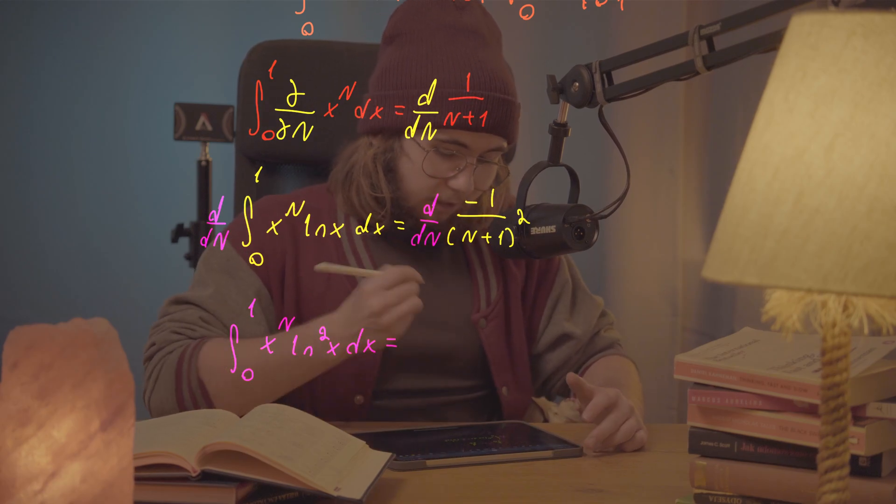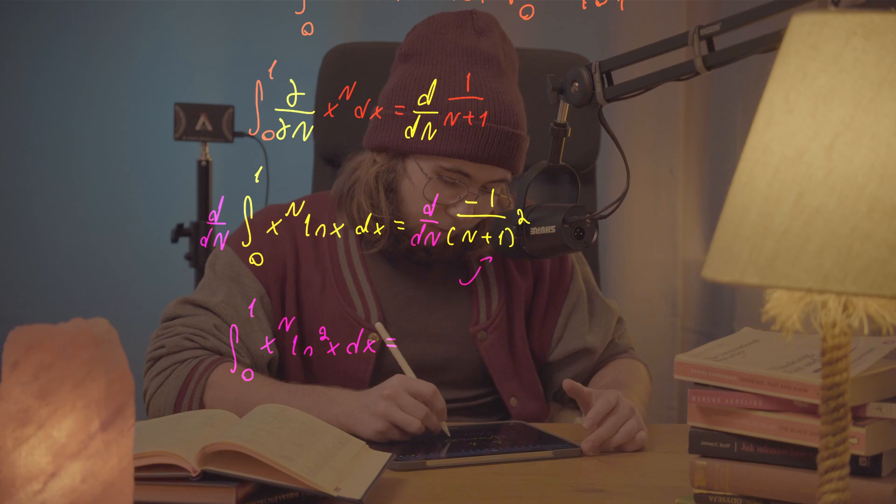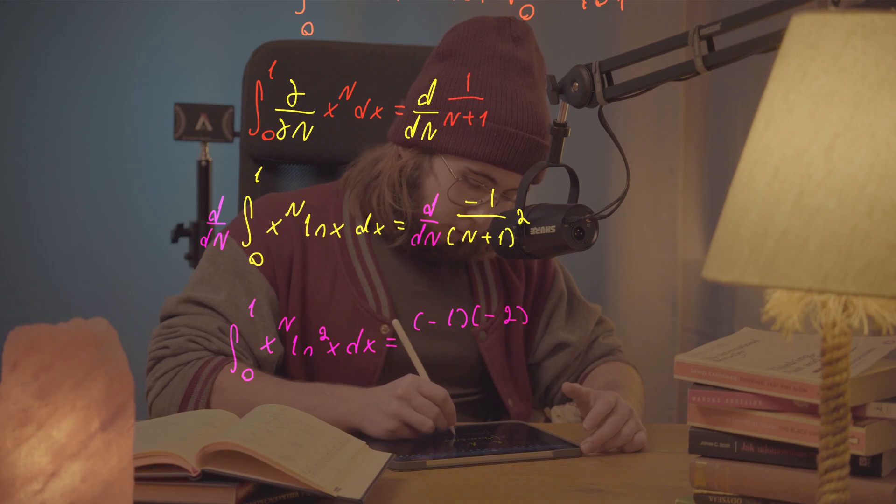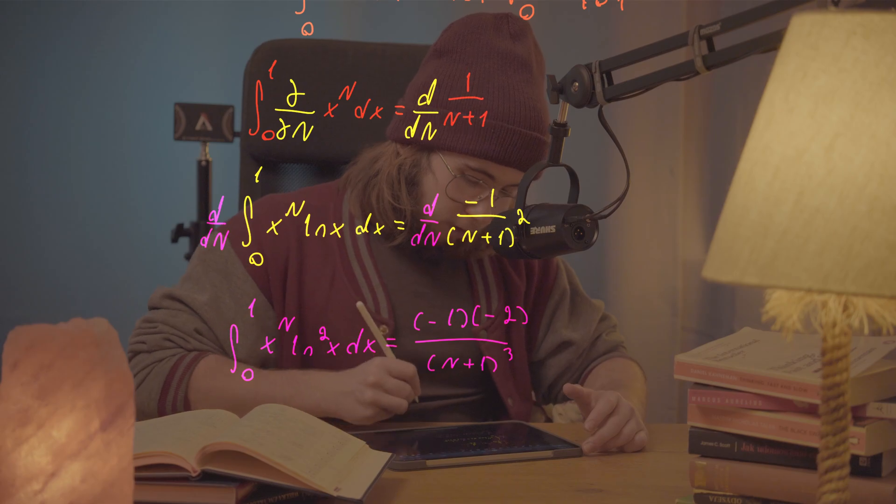dx is going to be exactly the same as what's going to be the derivative of this thing. It's going to be negative 1 multiplied by negative 2, and then divided by capital N plus 1 cubed.